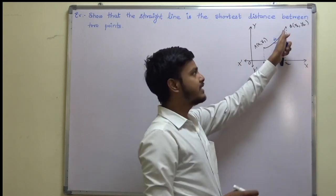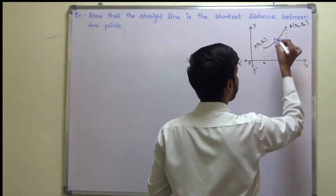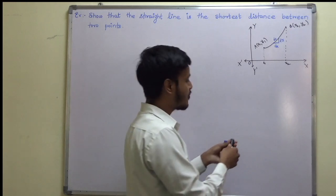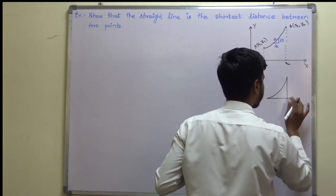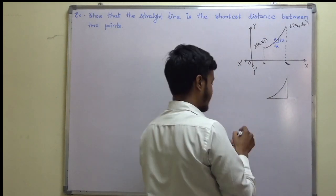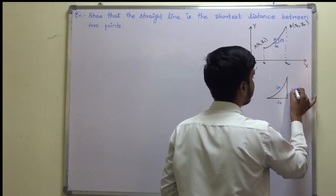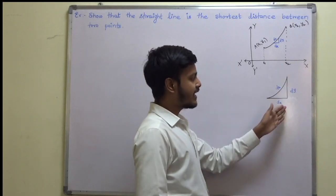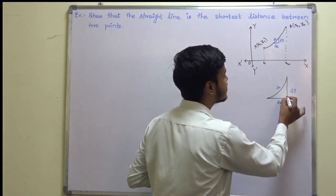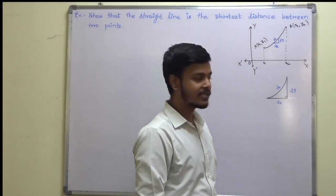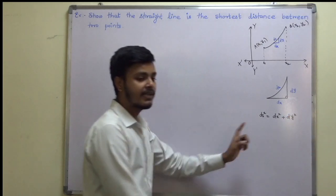If this is a small part dS, then the small part in the x direction is dx and the small part in the y direction is dy. Let me show you the magnified form of this. So this is dS, this is dx, and this is dy. Now we have a right-angle triangle as you can see — this is the magnified form of the small part. Since it is a right-angle triangle, you can apply Pythagoras theorem, which gives: dS² = dx² + dy².